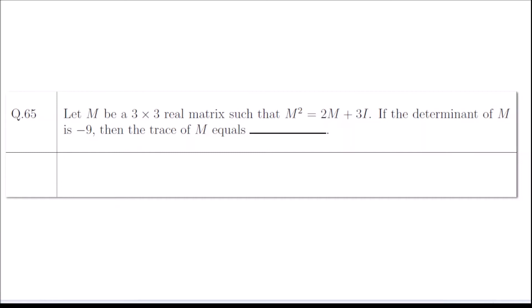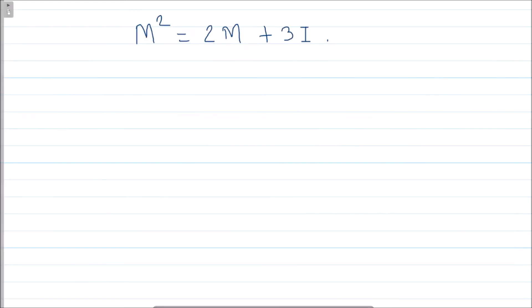Today we are going to see the solution of this question. This question was asked in the GATE examination 2022. Here you have M, a 3×3 real matrix, satisfying one equation, and the determinant of M is given to be -9. We have to find the trace of M.